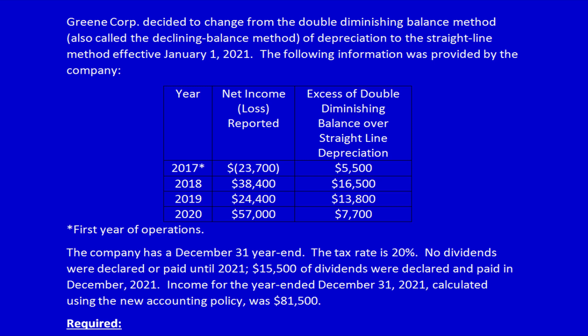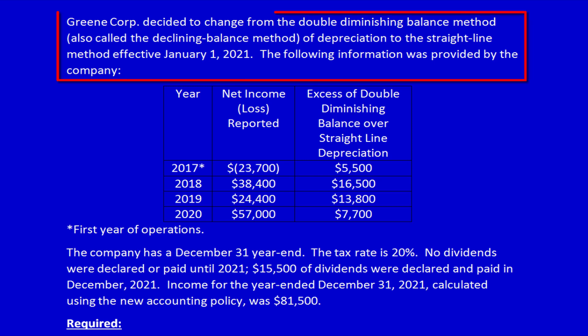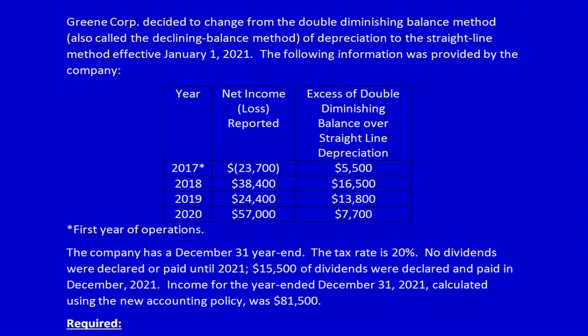As always with a question, let's start by reading. Green Corporation decided to change from the double diminishing balance method, also called the declining balance method, of depreciation to the straight line method, effective January 1st, 2021. The following information was provided by the company.